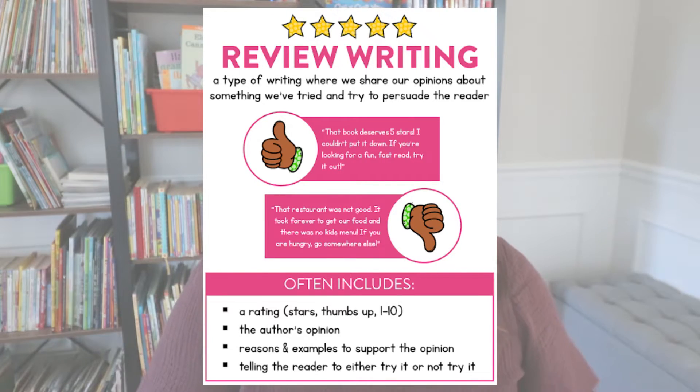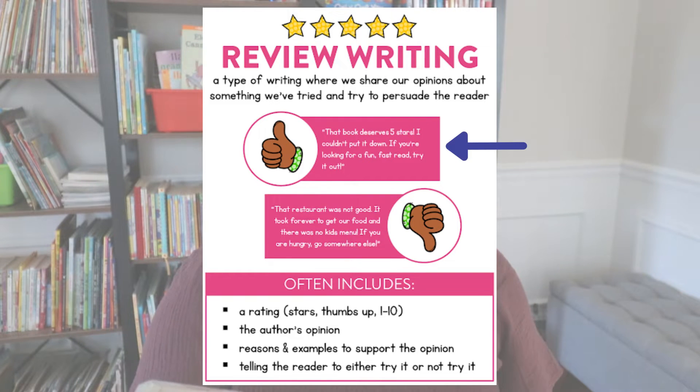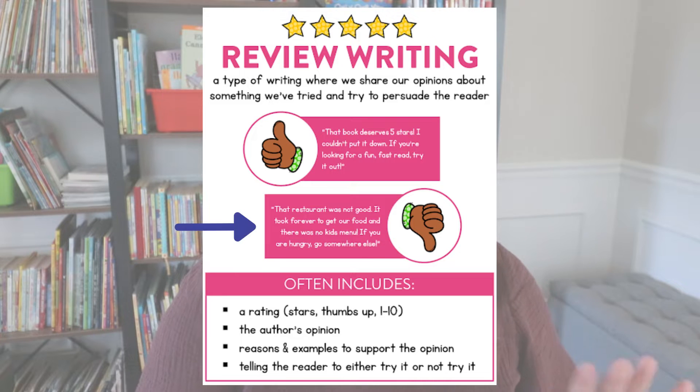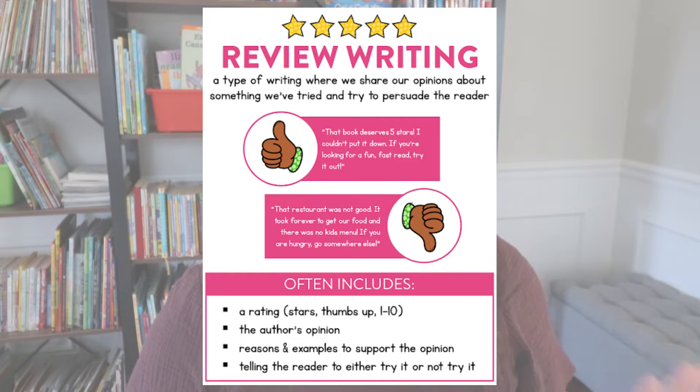Lesson one is to explicitly teach what review writing is. I would link it back to opinion writing — earlier in the year we wrote opinions and provided reasons to support them, and now we're going to apply it to real world writing by writing our own reviews. Here is the anchor chart I would use: 'Review writing is a type of writing where we share our opinions about something we've tried, and we try to persuade the reader.' A good review example: 'This book deserves five stars, I couldn't put it down.' A thumbs-down one: 'That restaurant was not good — it took forever to get our food and there was no kids menu. If you are hungry, go somewhere else.'